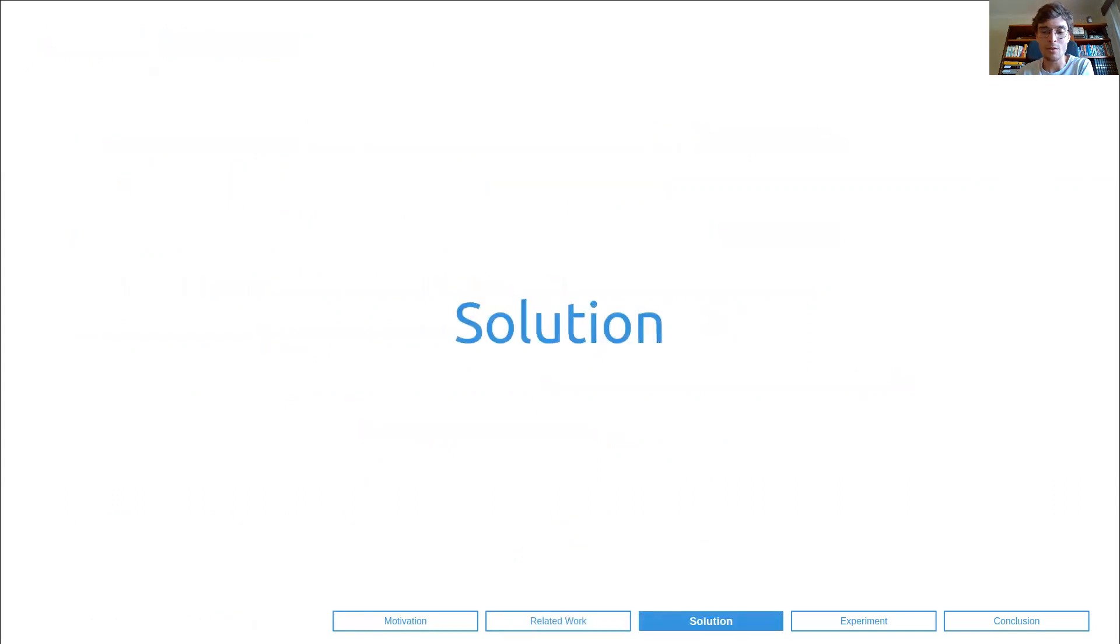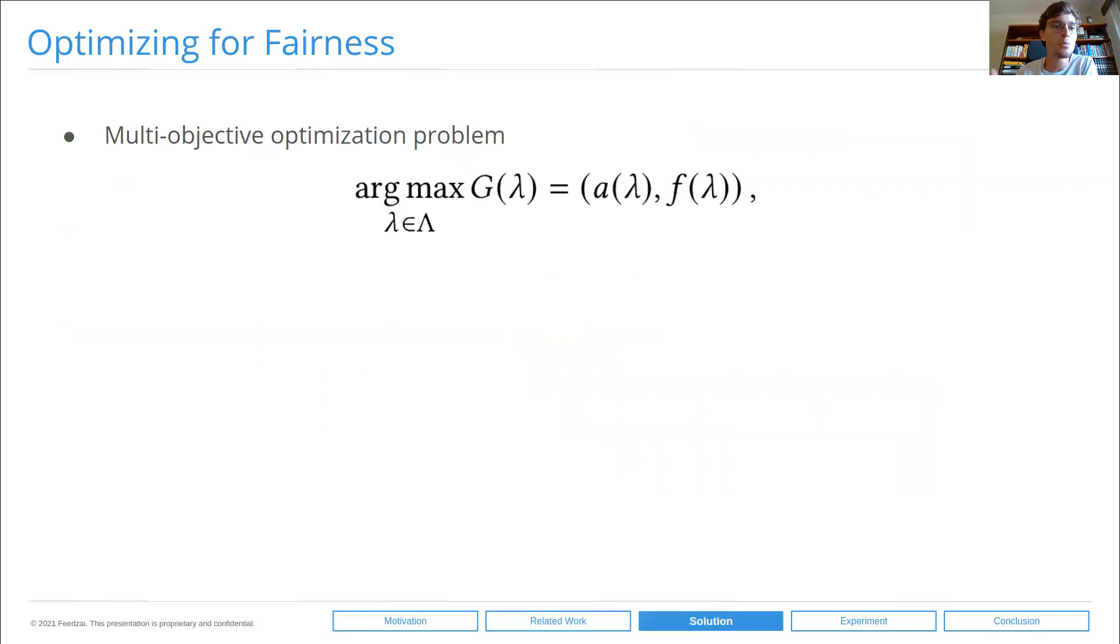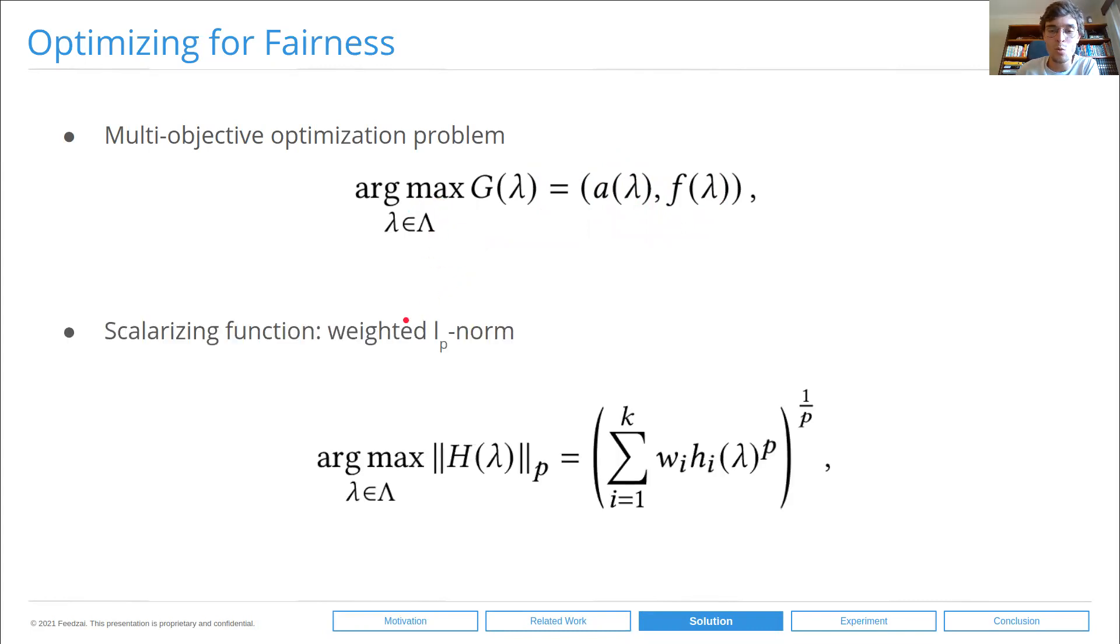Moving on to our solution, our methodology. We propose to cast this problem as a multi-objective optimization problem, in which we propose to simultaneously optimize a predictive accuracy metric and a fairness metric over the hyperparameter space lambda. A common way of tackling this multi-objective problem is by scalarizing this function. A common scalarization function is the weighted Lp norm. Here, H is a function from the hyperparameter space lambda to R^n. We would scalarize it back to R and optimize that scalarized function.